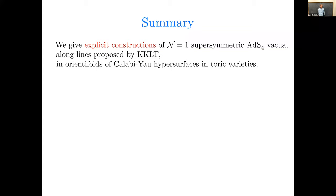First, the broad overview. We give explicit constructions of N equals one supersymmetric ADS4 vacua of type 2b string theory, along lines proposed by Kachru, Kallosh, Linde, and Trivedi in 2003. And we do so in orientifolds of Calabi-Yau hypersurfaces in toric varieties.